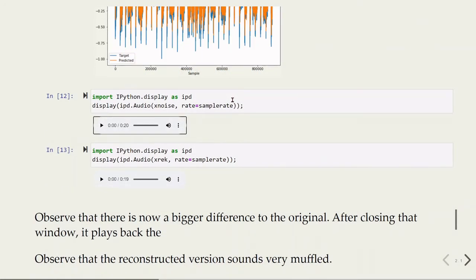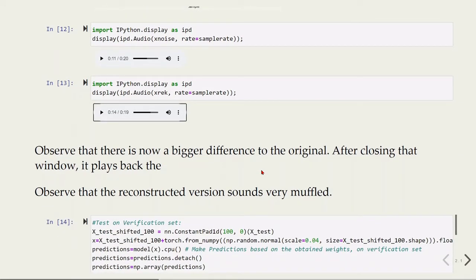We can also listen to it. Here is the input, the model was trained on the introduction of Back in Black by ACDC with added noise. The target is exactly this same audio file but without the noise. The prediction, the output of our model, shows that there is a bigger difference to the original signal and the reconstructed version sounds very muffled.